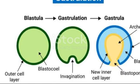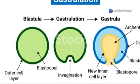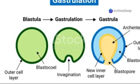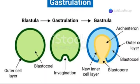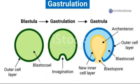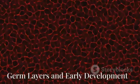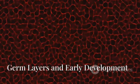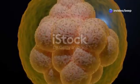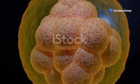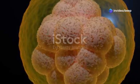The inner cell mass forms two distinct layers — the epiblast and the hypoblast — setting the stage for the next major milestone: gastrulation. Gastrulation transforms the bilaminar disc into a three-layered structure called the gastrula. During gastrulation, cells from the epiblast migrate inwards, forming the mesoderm, the middle of the three germ layers.